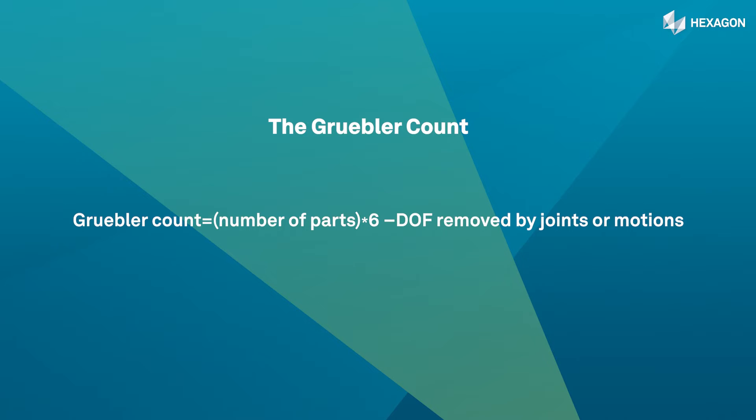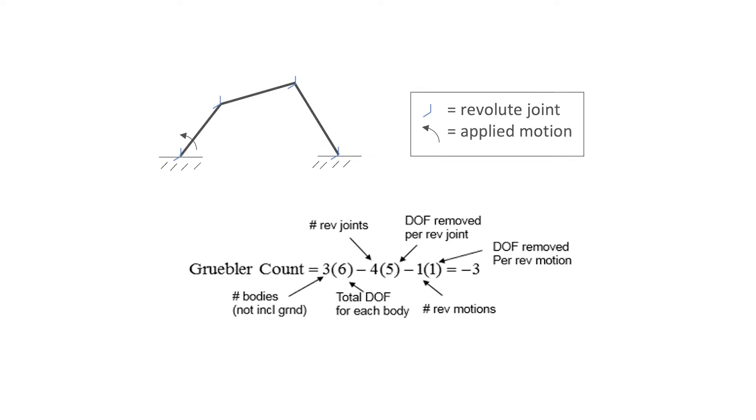As an example, consider the planar mechanism shown. Each revolute joint allows rotation about a single axis and allows no translational motion. Thus it removes five degrees of freedom. The applied motion on one of the revolute joints removes one degree of freedom. The resulting Gruebler count is minus three.